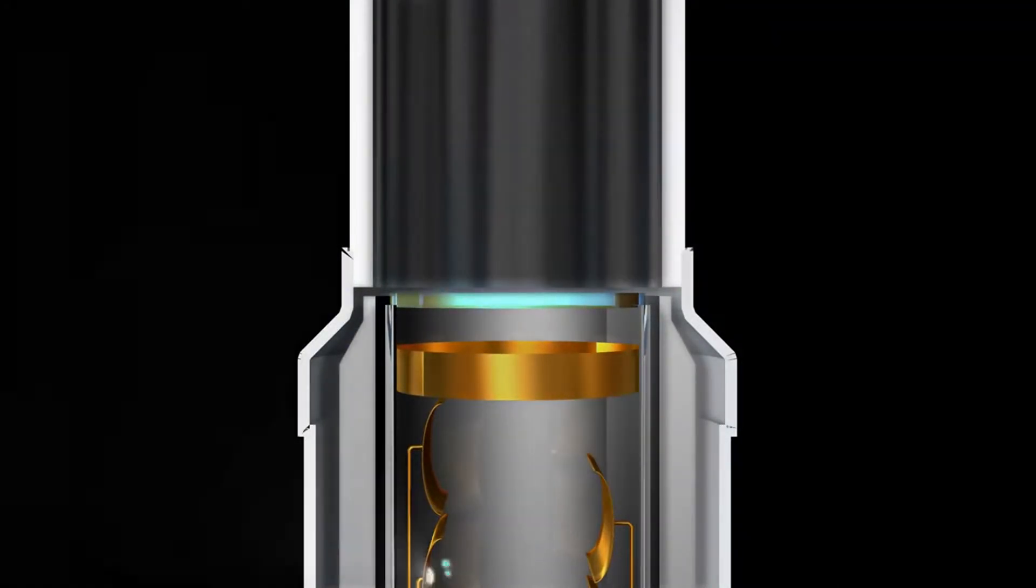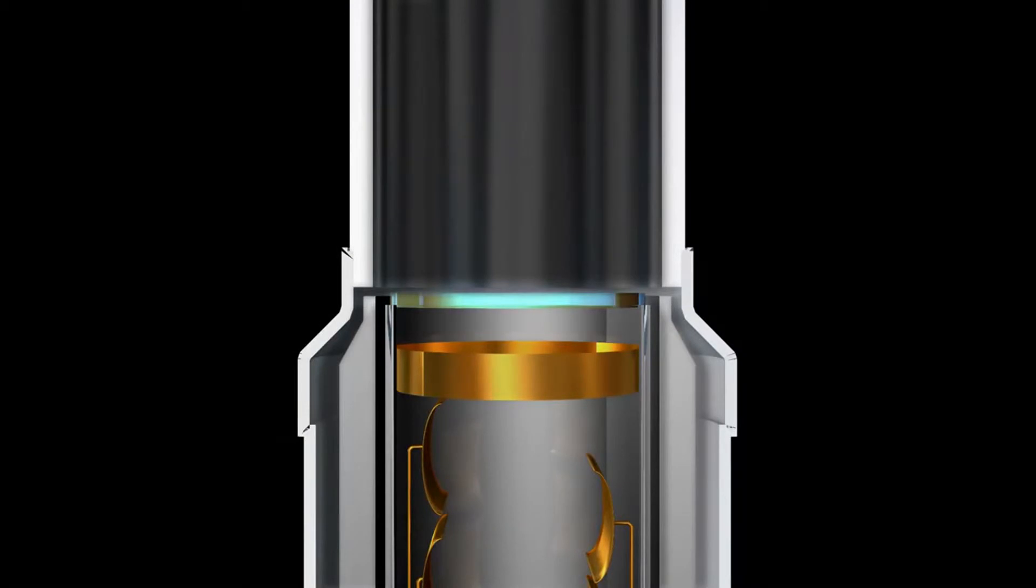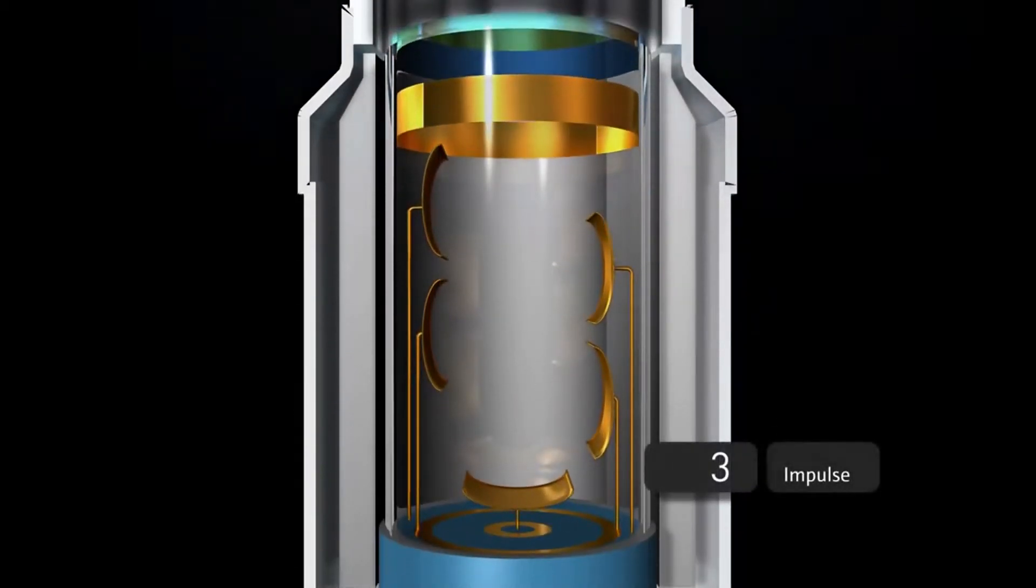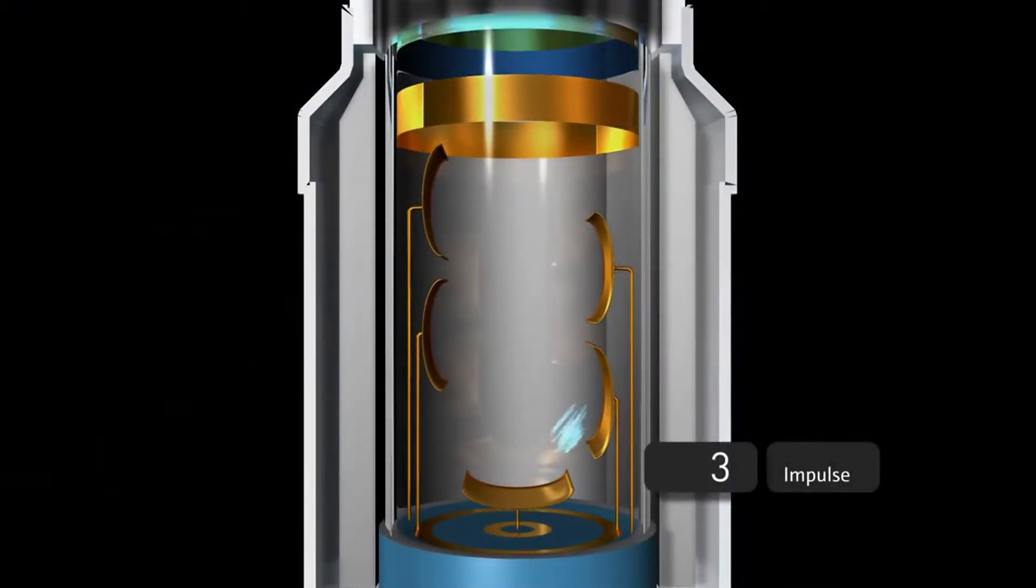In the photocathode, the flash is converted into a very low charge, which is then amplified to a valuable current pulse in the photomultiplier. This is then processed to become a measuring signal.